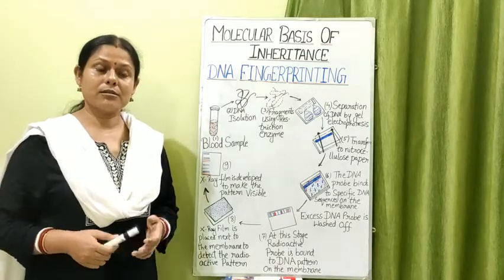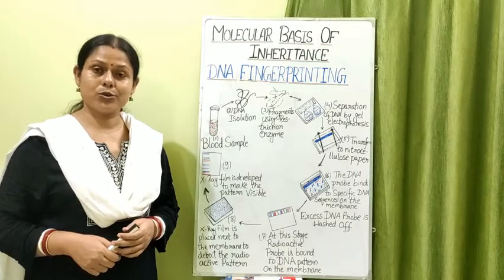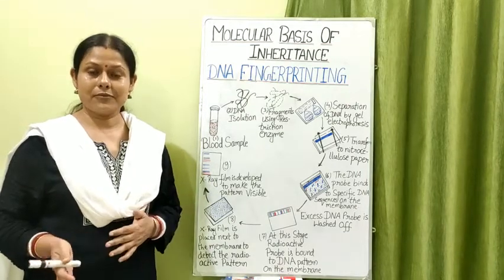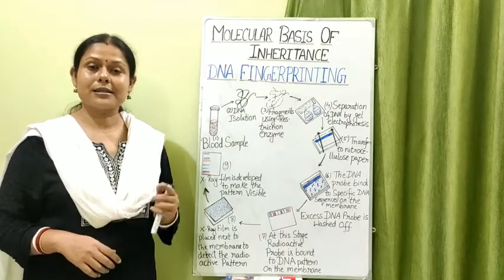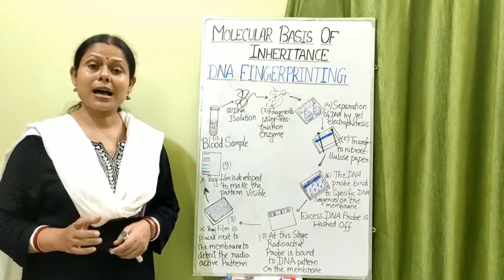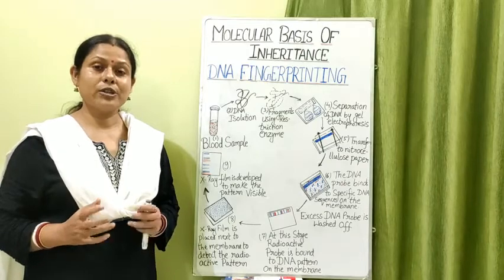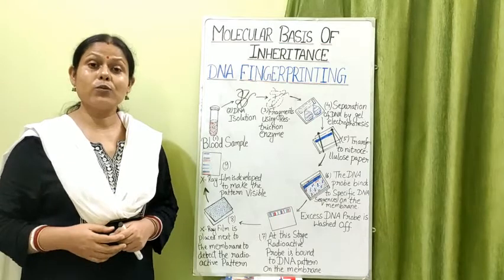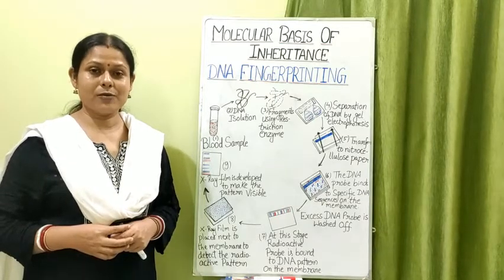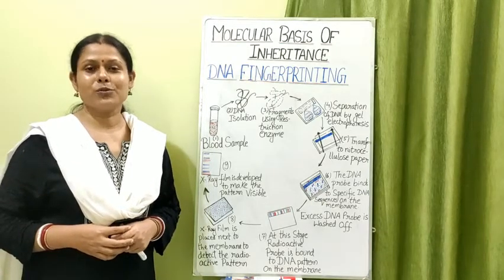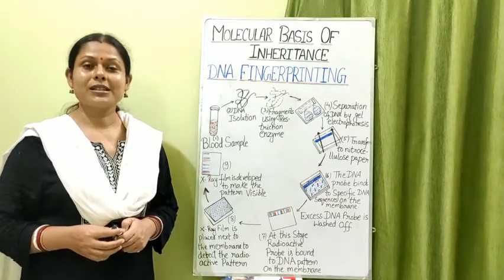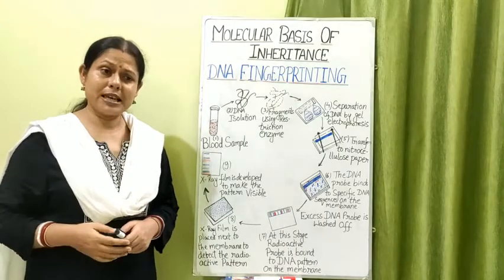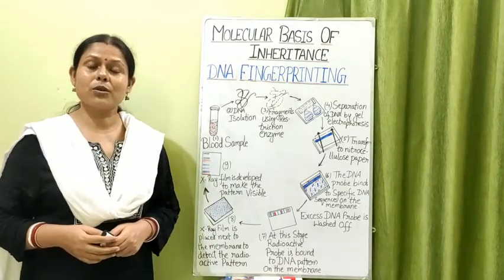Human beings are a result of sexual reproduction, and the zygote is formed because of the fusion of the male and female parents' gametes — that is, a sperm and ovum. As a result, the DNA fingerprint of an individual will match with both parents, that is both father as well as mother.